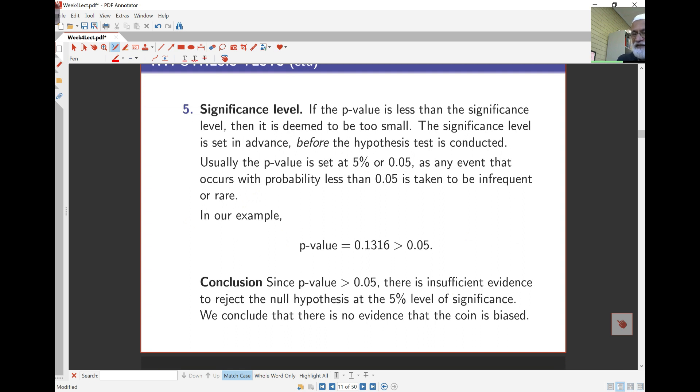Usually it's 5% or 0.05, and I'll stick with that for the moment. So I compare my P-value with this significance level of 0.05. It's bigger than that. That means I would conclude that since P-value is bigger than 0.05, there is insufficient evidence to reject the null hypothesis. In other words, I can conclude there's no evidence that the coin is biased. So the coin in this case, I would conclude, is not biased towards heads.